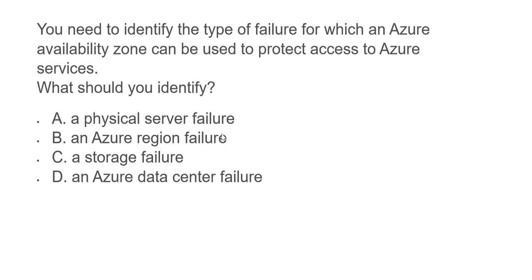Option B states an Azure region failure. Always remember: if there is a region failure, for example if five data centers comprising three AZs in a region all go down, you have to switch over to a different region. Switching to a different AZ will not help because all your AZs in that region have gone down.